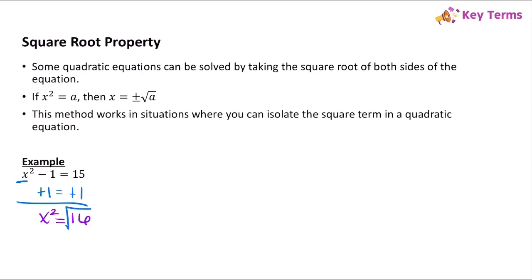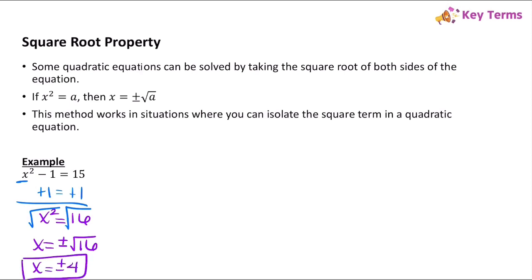So I take the square root of 16 and the square root of x squared. We now have x equals, and remember when we take the square root, it's going to be plus or minus. So we have x equals plus or minus the square root of 16. The square root of 16 is 4, so we have x equals plus or minus 4. And that's the solution.